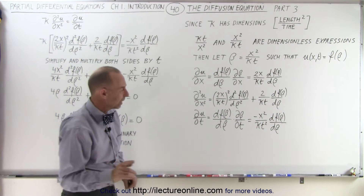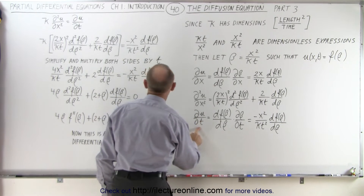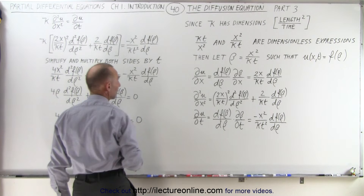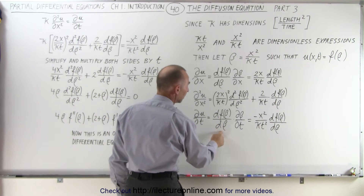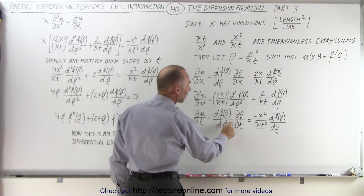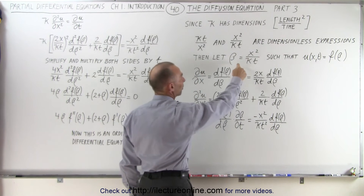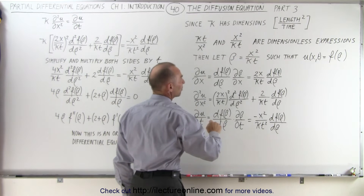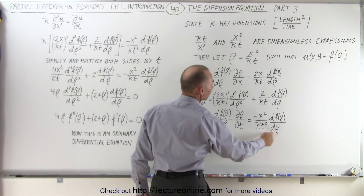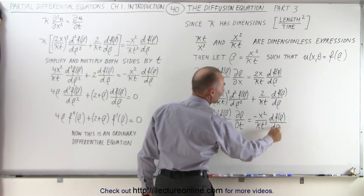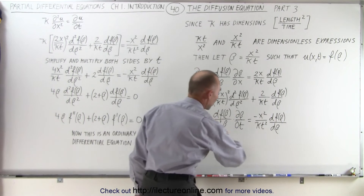Where it's different is when we take the first derivative of u with respect to t, and we don't assume this is a constant. We take the derivative with respect to beta of the function of beta, times the partial of beta with respect to time. Taking that partial derivative with respect to time gives us minus x squared over kt squared, times the derivative with respect to beta of the function of beta — a very different result.